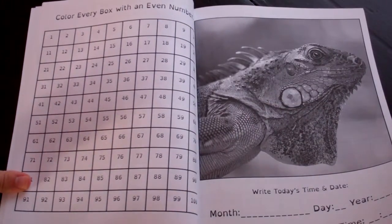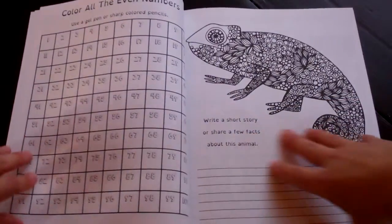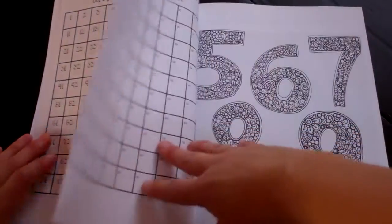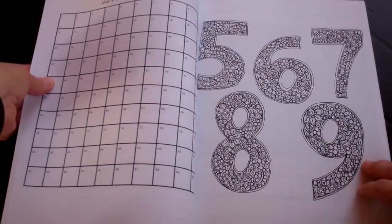Color every box with an even number. So just color the even numbers, so we're learning about evens. Short story. More learning about evens.